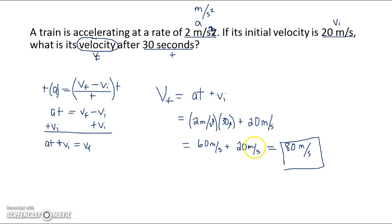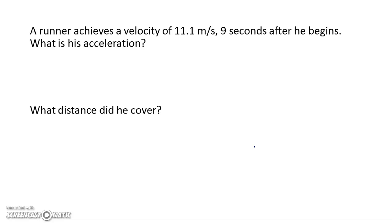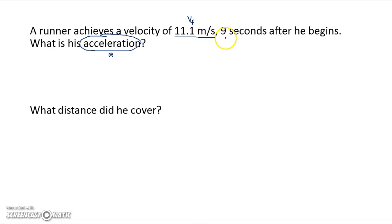And there you go. Let's do another one. A runner achieves a velocity of 11.1 meters per second, 9 seconds after he begins. What is his acceleration? So we're looking for acceleration, which is a. We know that he achieves a velocity of 11.1 meters per second, which means that's where he ends up. Well, what did he begin at? This is probably a race, and it doesn't say he started at a velocity, so we're going to assume he began at 0 meters per second, which is going to be our vi. And it took him 9 seconds to get to that speed — that should be time.